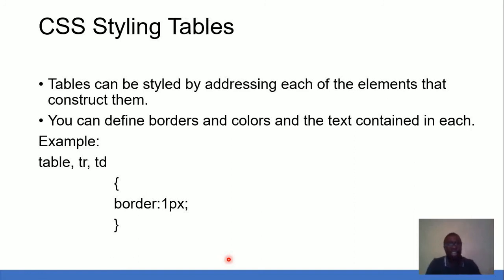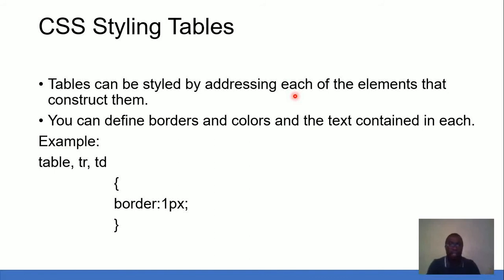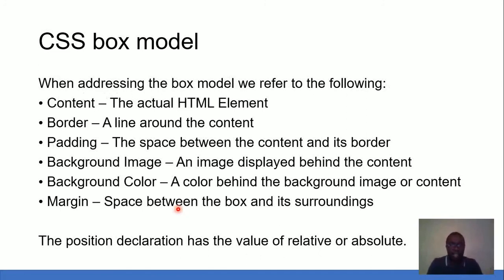We can also style tables. Tables can be styled by addressing each of the elements that construct them — table row, table header, and table data cell. In the CSS syntax, we use the table, table row, and data cell as selectors, and then specify properties such as border: 1px. So tables can be styled using the same CSS rules.